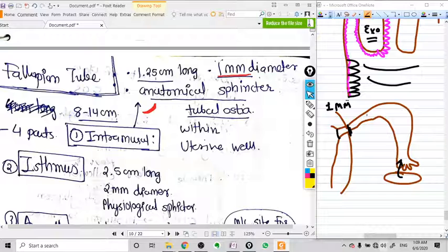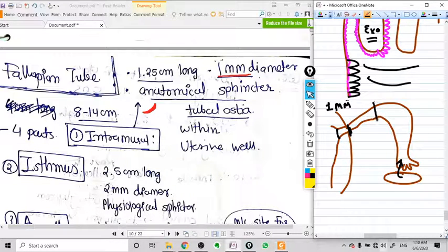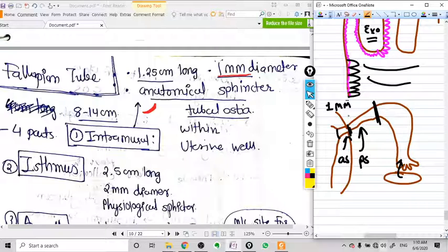Another 1.5 to 2.5 centimeter part is called isthmus. It is a physiological sphincter. This is the anatomical sphincter, this is the physiological sphincter because this part is also not very wide, it's only 2 mm in size, and this is 2.5 centimeters long.